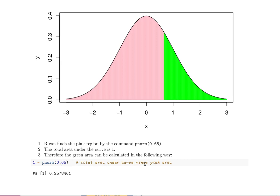That's almost 26% as you can see. The final problem is to look at the probability that Z is between two values.